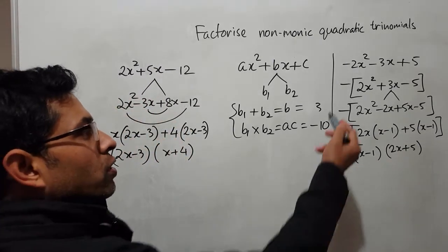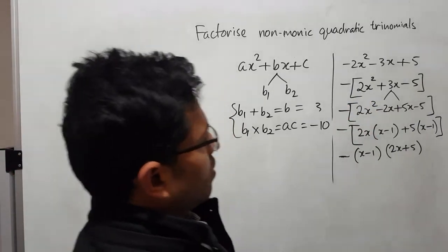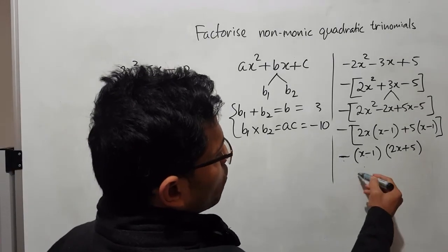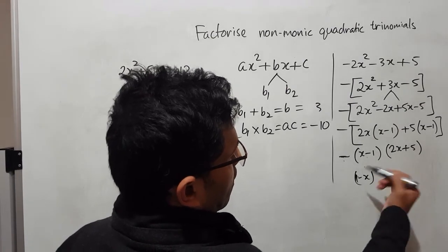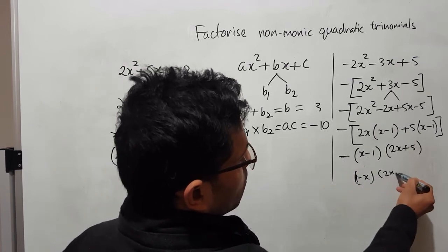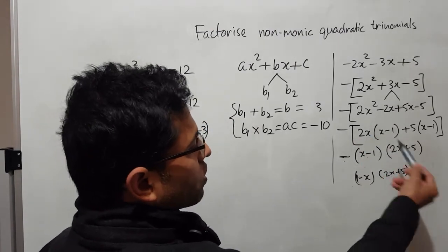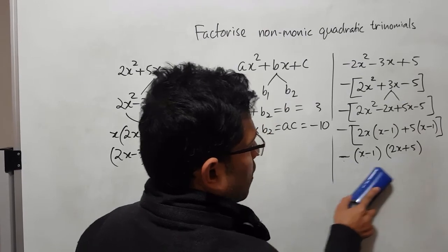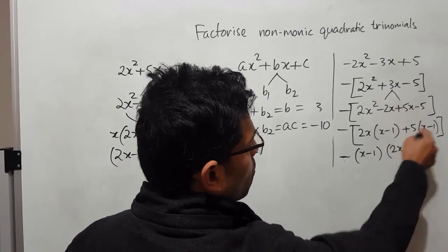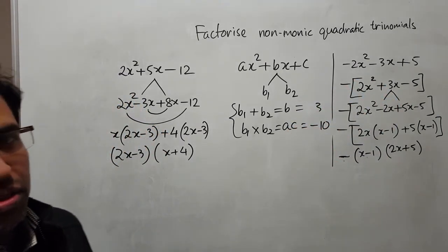If you don't take that negative out at the beginning, that's still fine. You will end up with the same answer, but the negative may end up inside — so instead of x minus 1, you might get 1 minus x. Both forms are equivalent and correct. Don't worry too much — as long as you factorized properly and got the same common factor, you are correct.